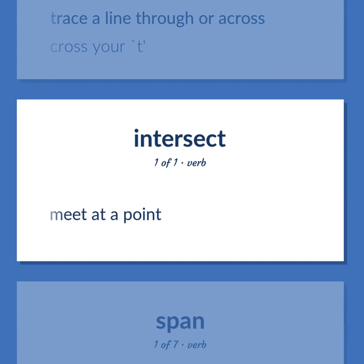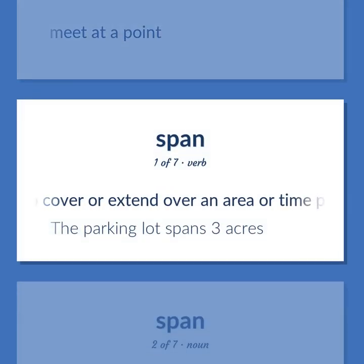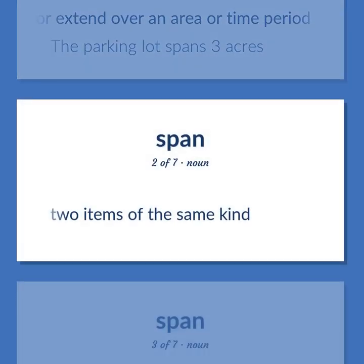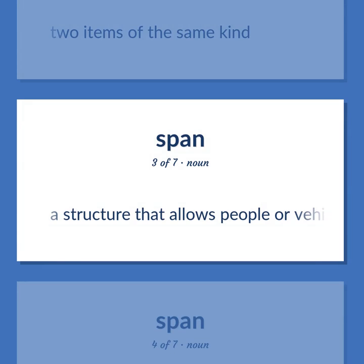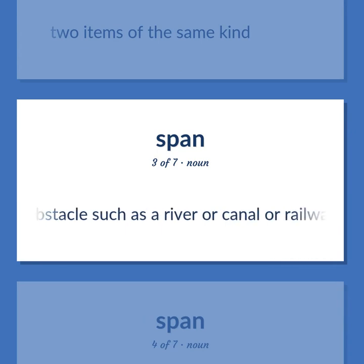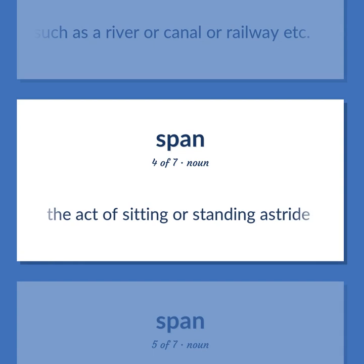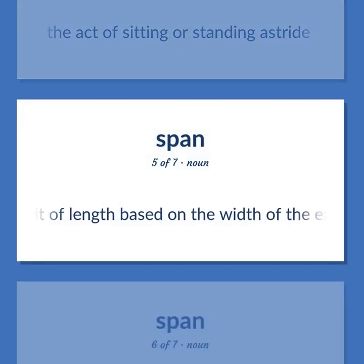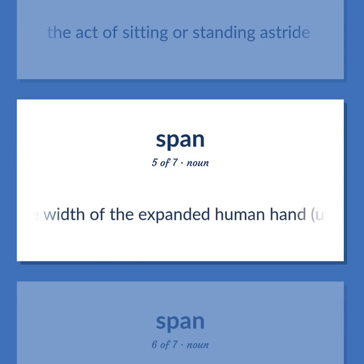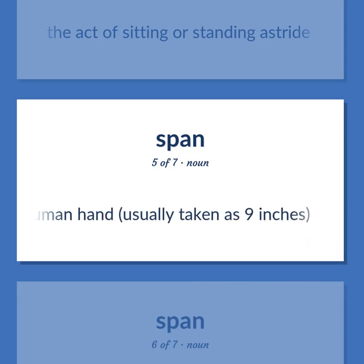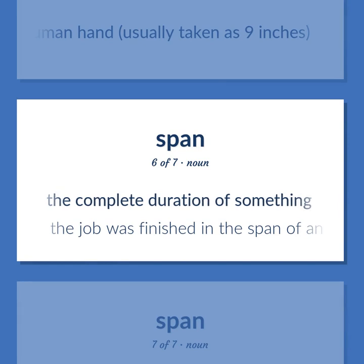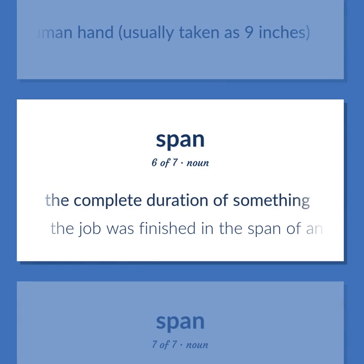Span: Meet at a point. To cover or extend over an area or time period — the parking lot spans three acres. Two items of the same kind. A structure that allows people or vehicles to cross an obstacle such as a river, canal, or railway. The act of sitting or standing astride. A unit of length based on the width of the expanded human hand, usually taken as 9 inches. The complete duration of something — the job was finished in the span of an hour.